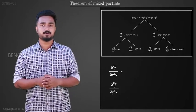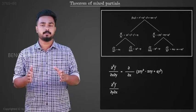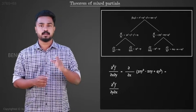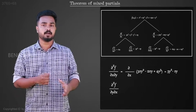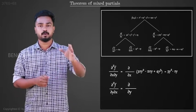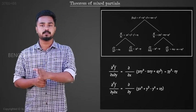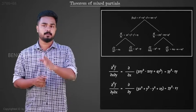∂²f/∂x∂y is equal to ∂/∂x of 3xy² minus 2xy plus 4y³, that is equal to 3y² minus 2y. ∂²f/∂y∂x is equal to ∂/∂y of 3x² plus y³ minus y² plus 25, that is equal to 3y² minus 2y.